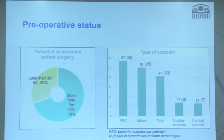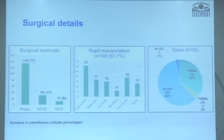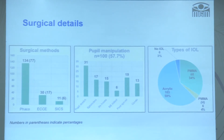Most cataracts were the posterior subcapsular type, but about 23% presented with total cataract. Around 77% of surgeries were done by phacoemulsification, while 17% and 6% were done by extracapsular or small incision cataract surgery respectively. More than 50% of patients required intraoperative pupillary management using Osher Y-hooks, iris hooks, or multiple sphincterotomies. Most lenses were acrylic IOLs, though 34% received PMMA lenses.